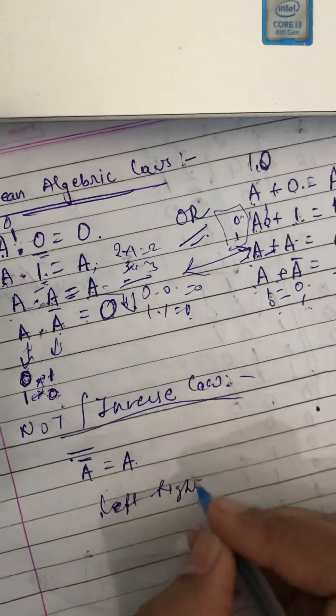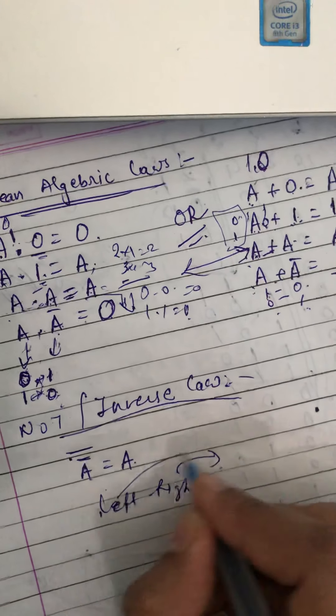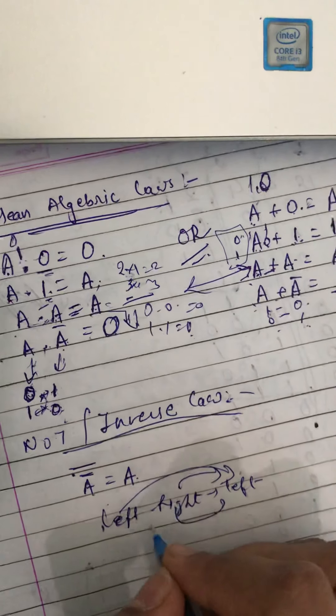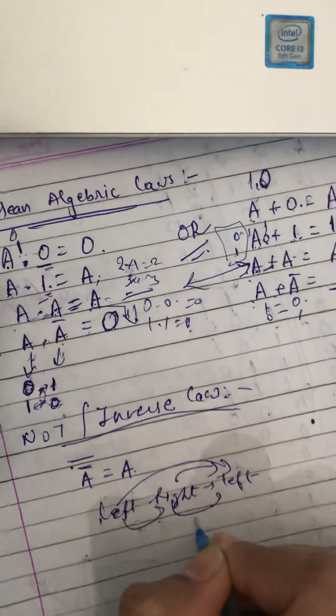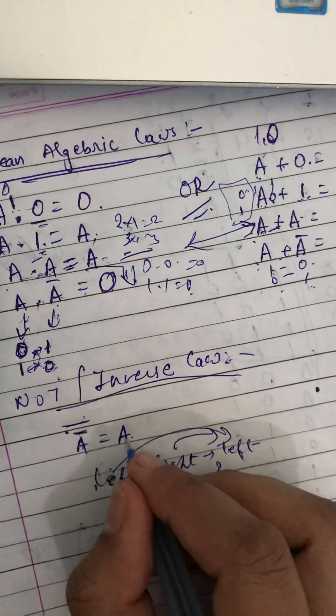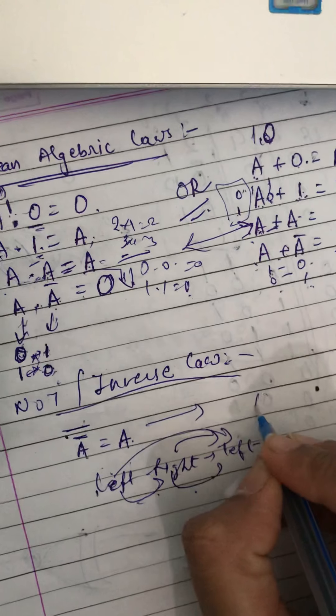But if you put one more mirror, you will get your left back because of the inversion. So this is the way that dash dash or bar bar will be the original number.